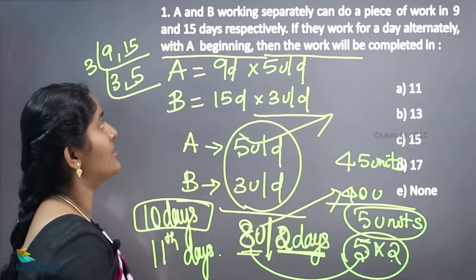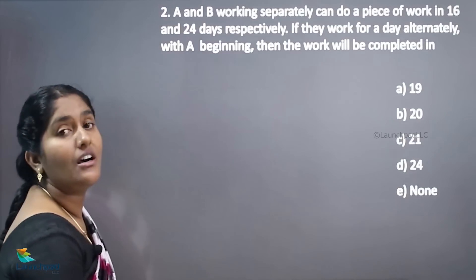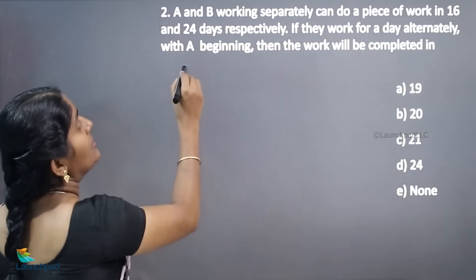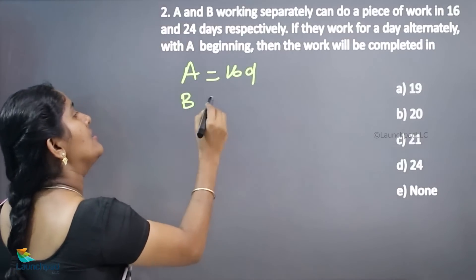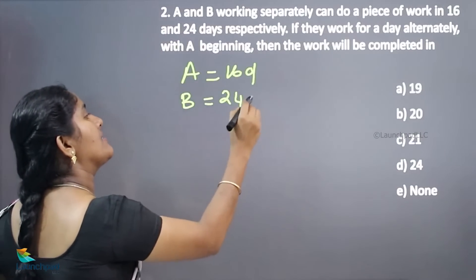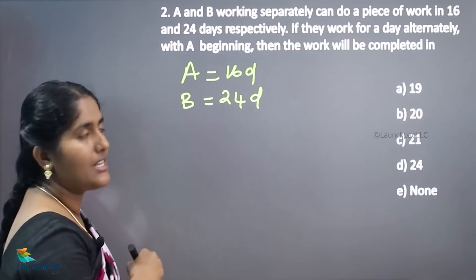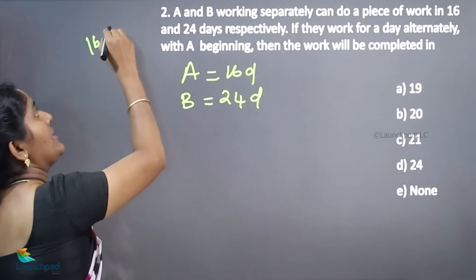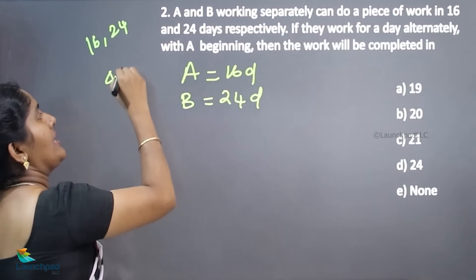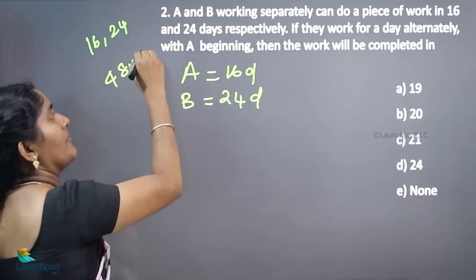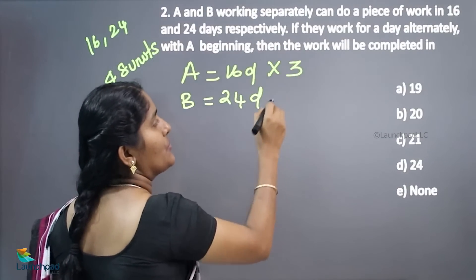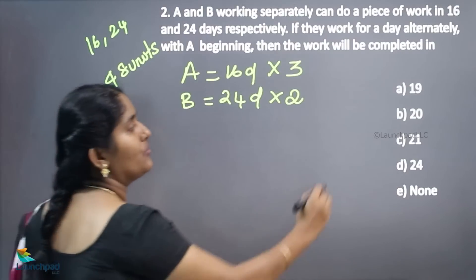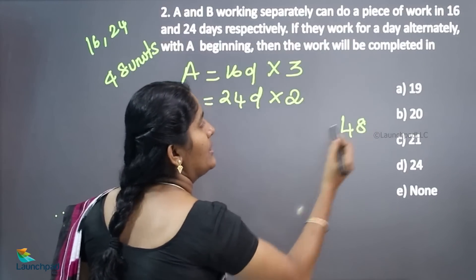Your next question is A and B working separately. A can take 16 days, B can take 24 days. So what is LCM of 16 and 24? 48 units. 16 into 3, 24 into 2. Now totally 48 units.